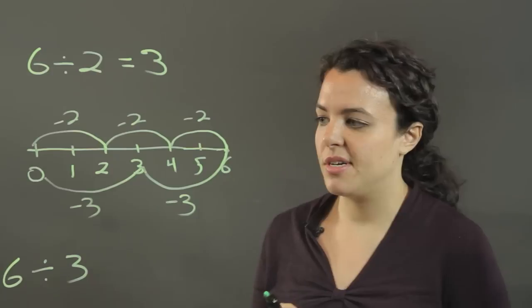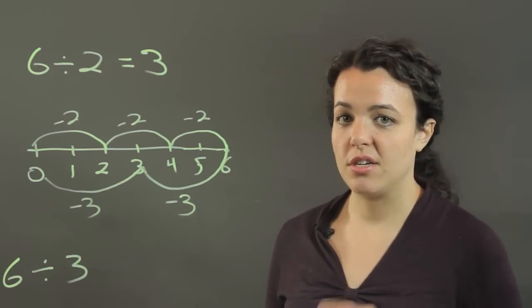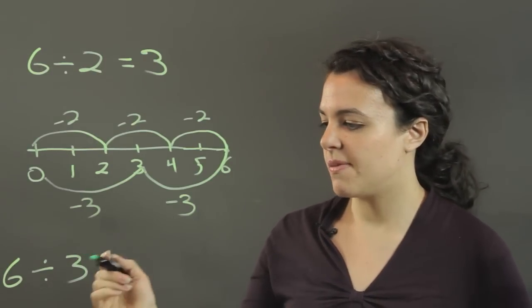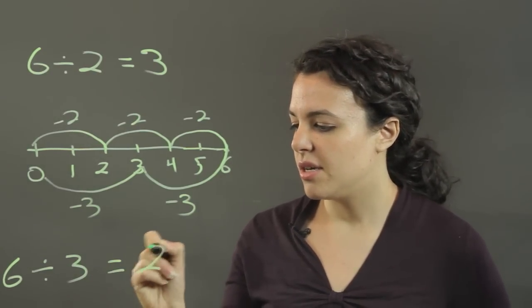And there, dividing by 3 is the same as subtracting 3 twice. So 6 divided by 3 equals 2.